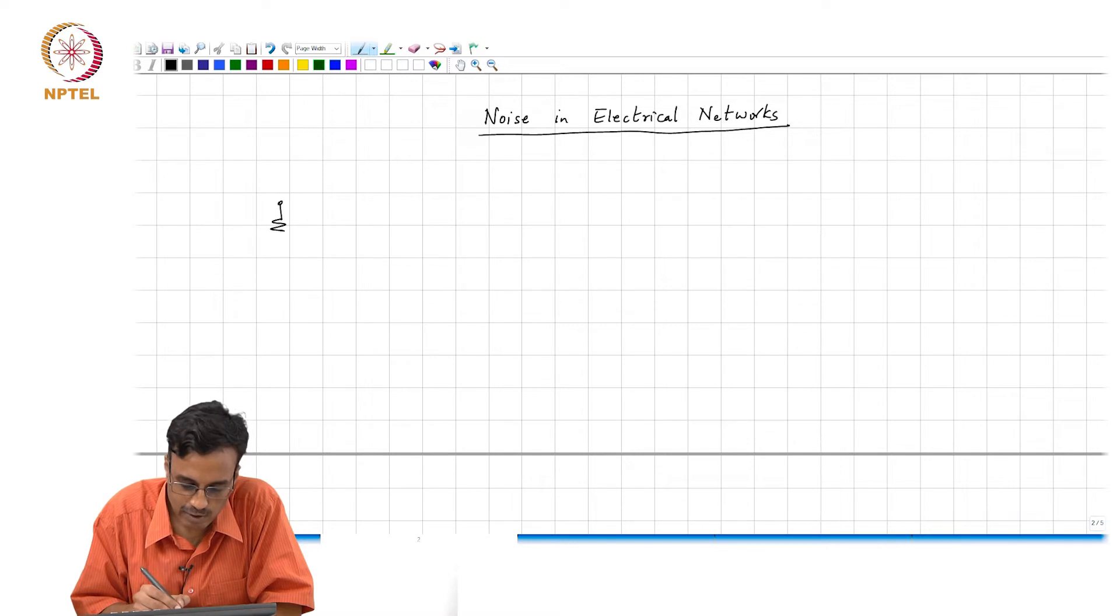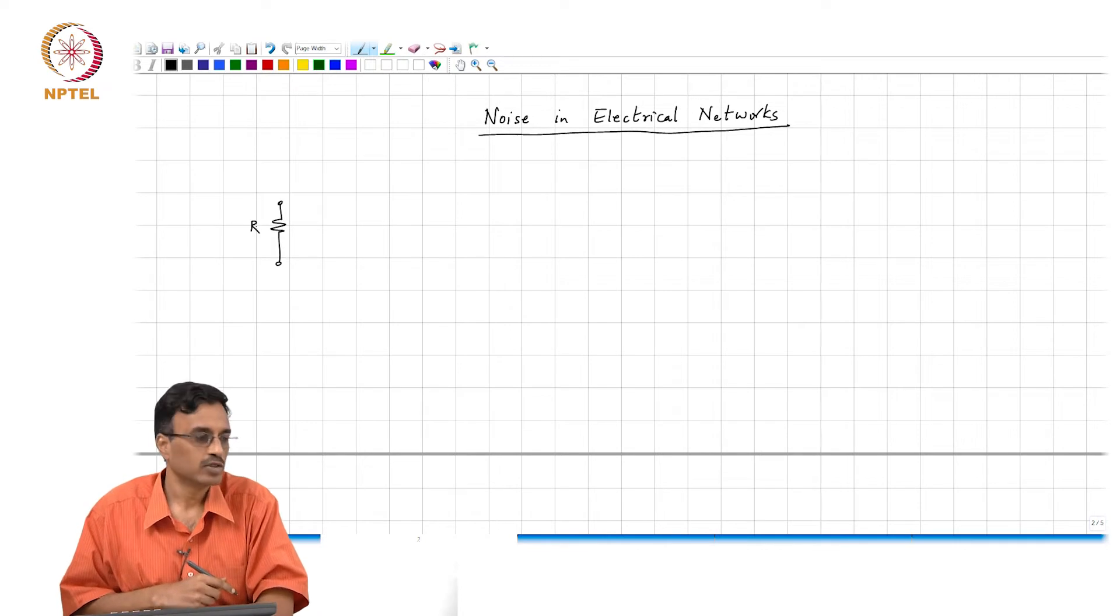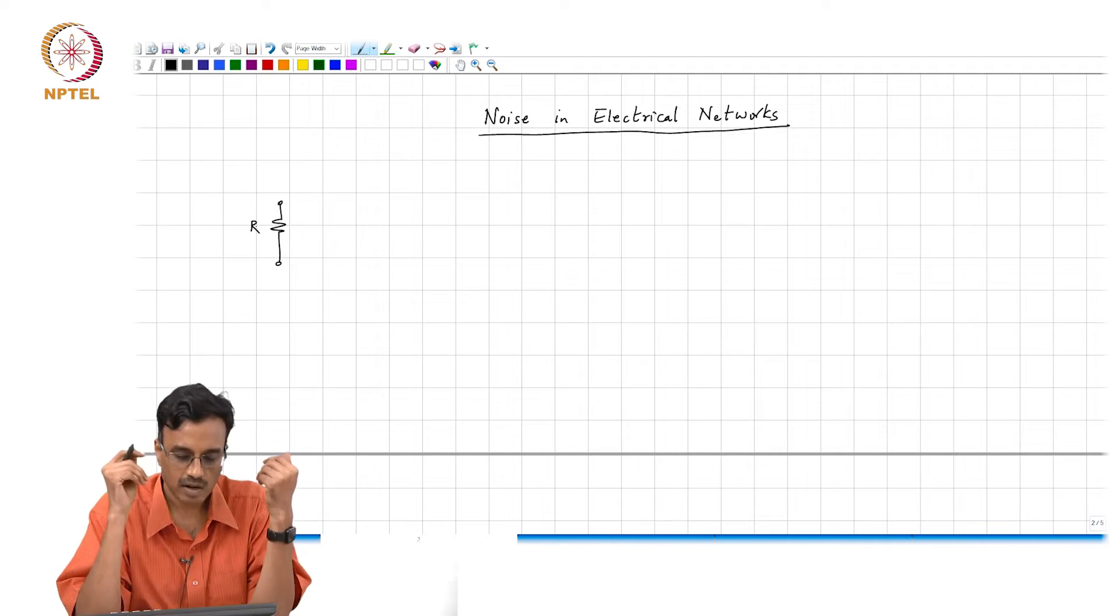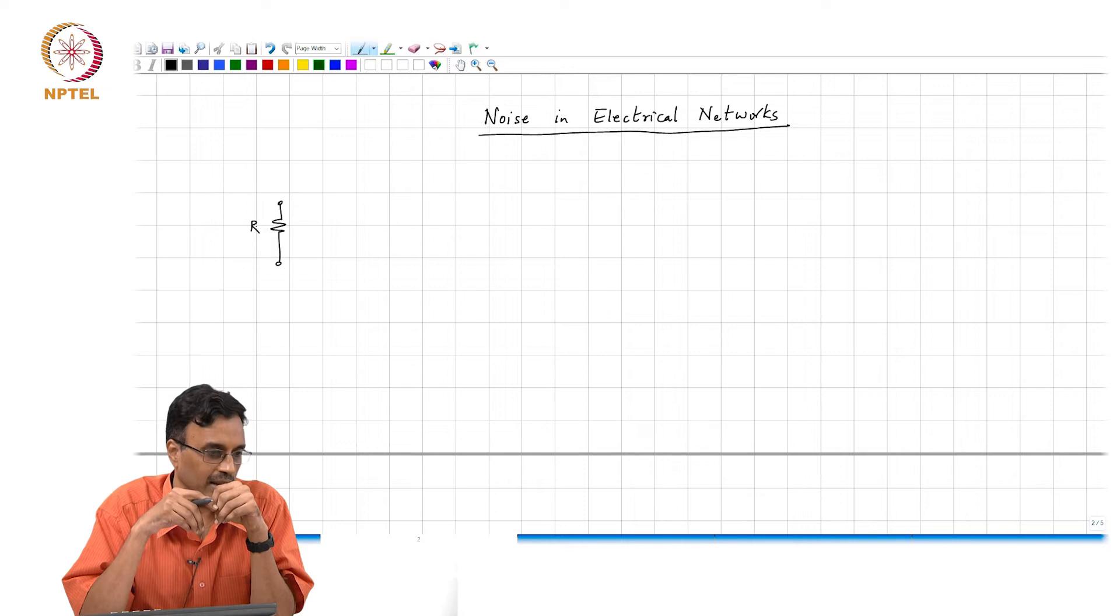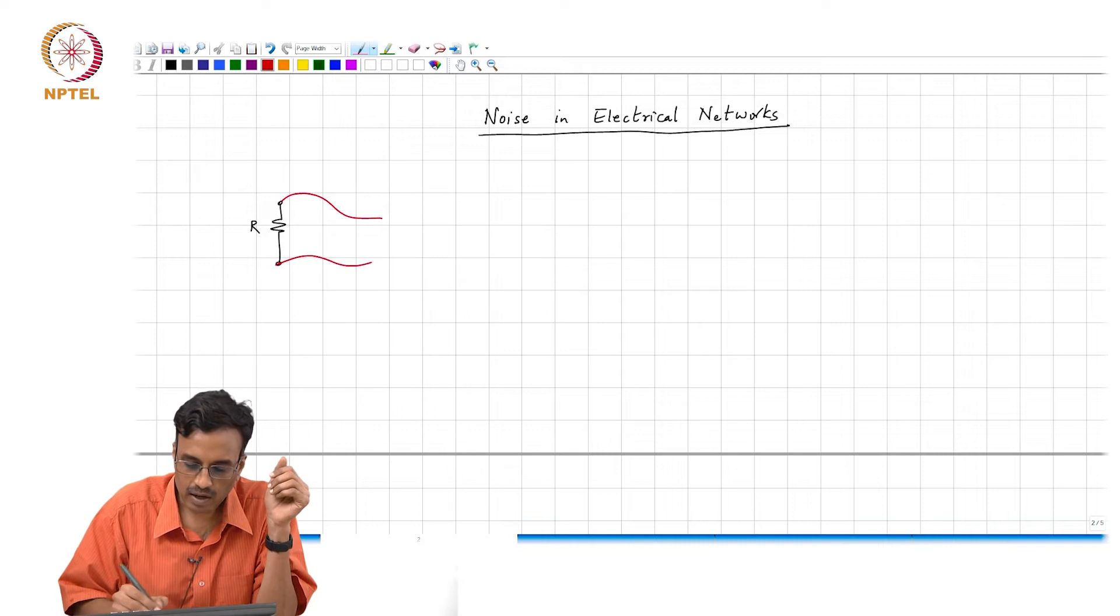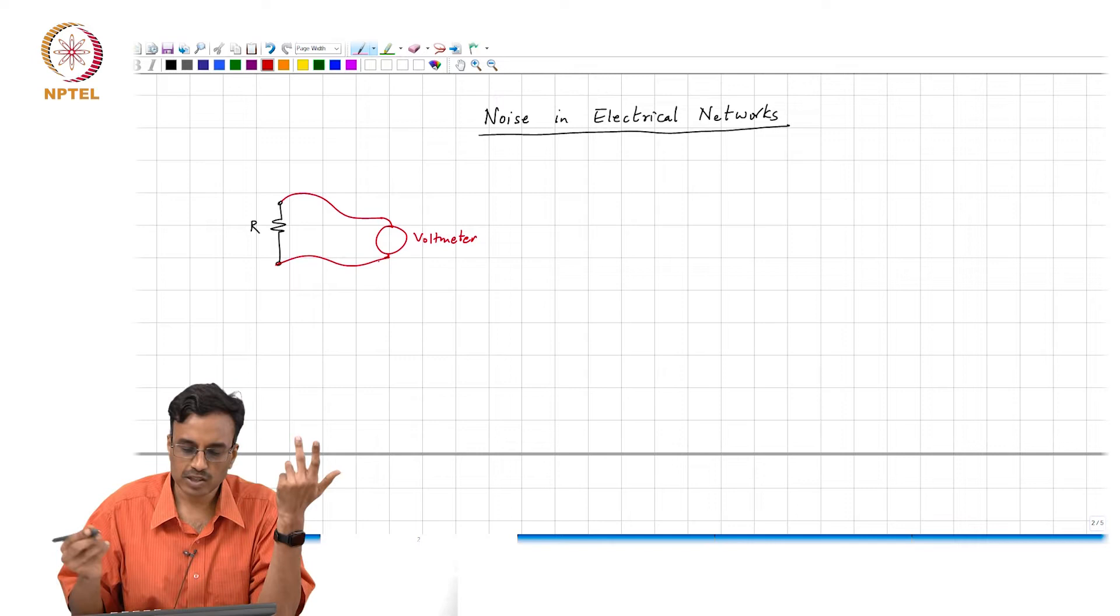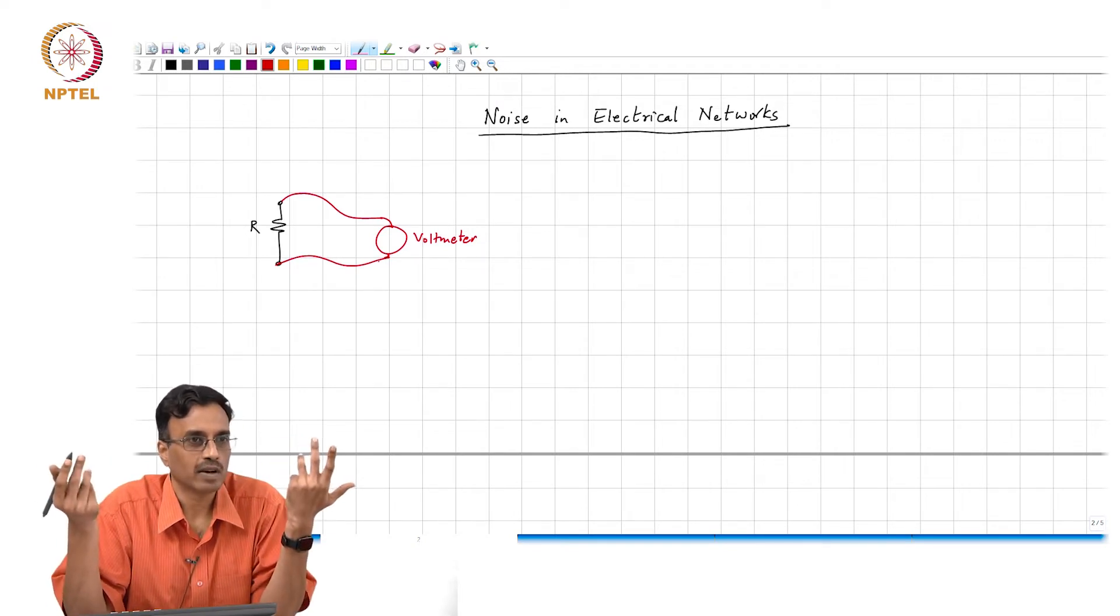So first I am going to mention some facts of life. There is nothing we can do about these things. So it turns out that if you had a resistor in thermal equilibrium with its surroundings at absolute temperature T, it turns out that if you put a fictitious voltmeter across the resistor, it turns out that the voltage is not, you would ideally think that the voltage should be zero, right, no current is flowing through the resistor after all.